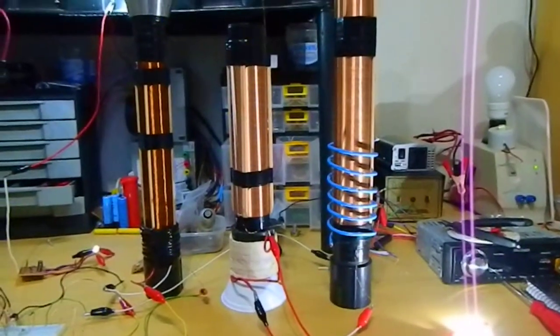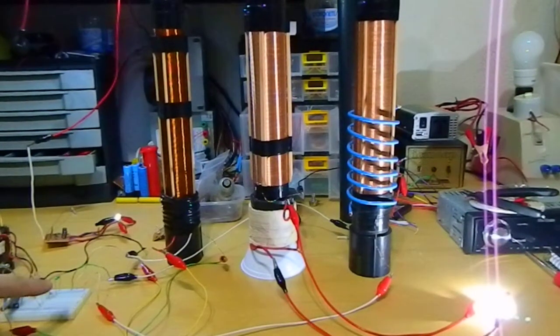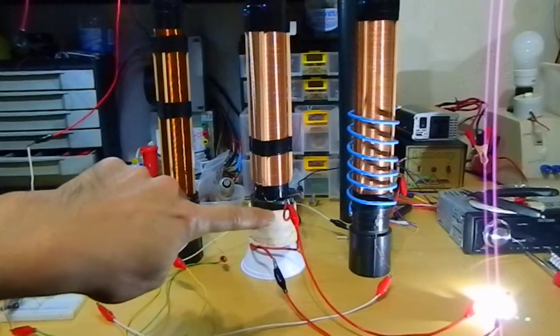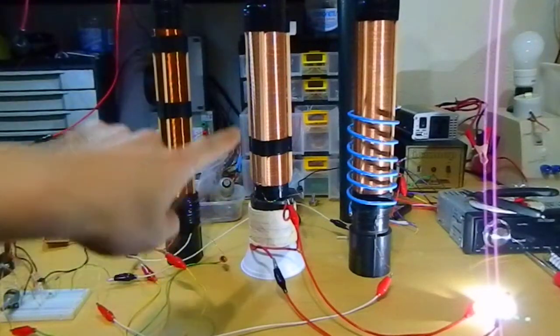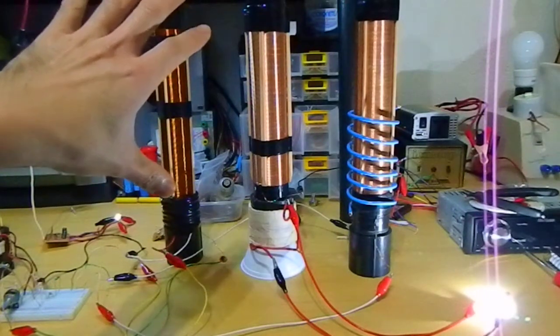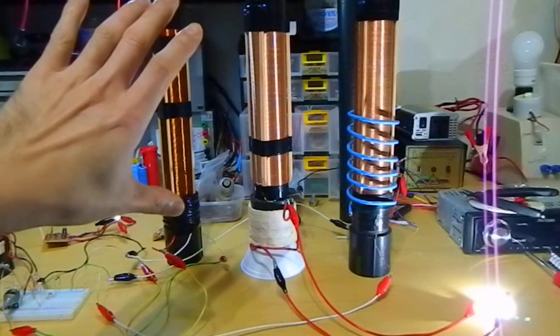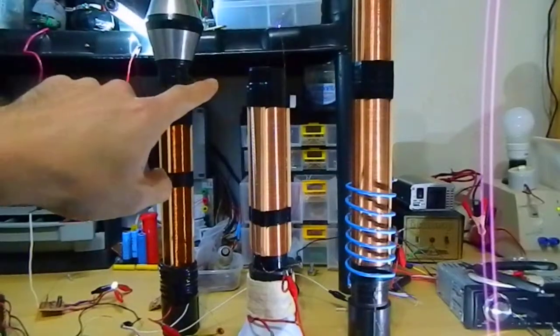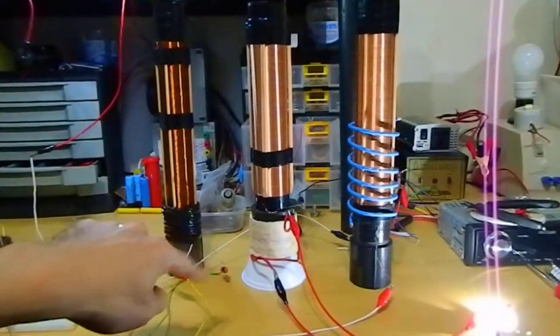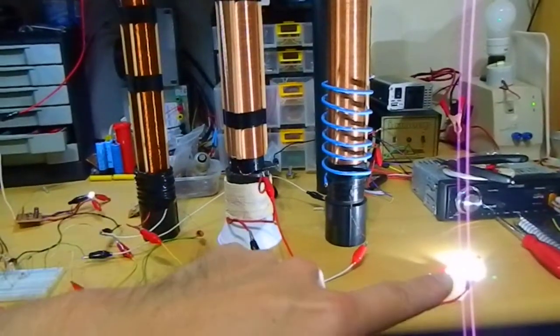So connecting the Slayer Exciter, the negative rail of the Slayer Exciter to the earth ground, where this, let's call this the L4, is connected, it gives me a much higher output on the plasma burst on the top. And also on this Bifiler Tesla coil where it is connected those LEDs.